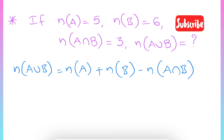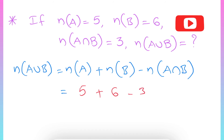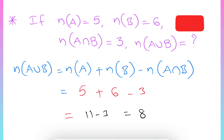Keeping the left side as is: n(A ∪ B) equals n(A), which is given as 5, plus n(B), which is given as 6, minus n(A ∩ B), which is given as 3. That equals 5 plus 6, which is 11, minus 3, which is 8. So the value of n(A ∪ B) is 8.